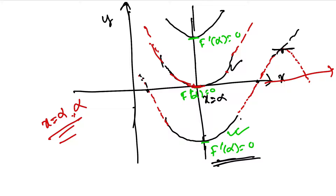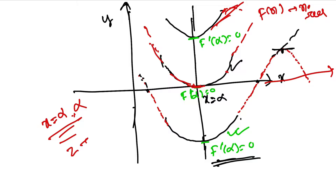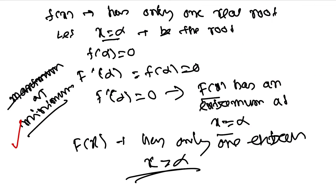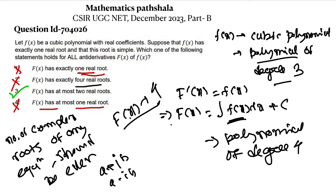So the number of real roots is two in that case as well. For the third curve shape, the curve cannot touch or cut the x-axis again for the same reason — F(x) has only one extremum — so in that case F(x) has no real root. In all three cases, F(x) has at most two real roots. Therefore, Option 4, which states F(x) has at most two real roots, is true. Thank you for watching this video.